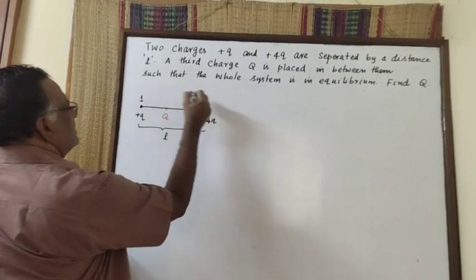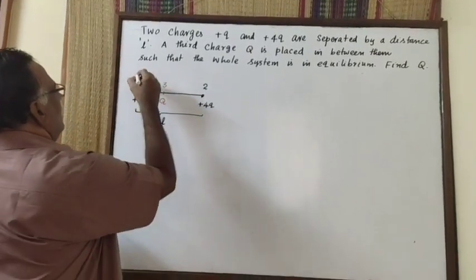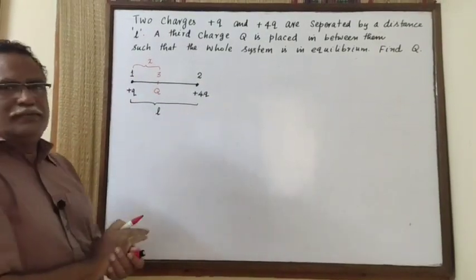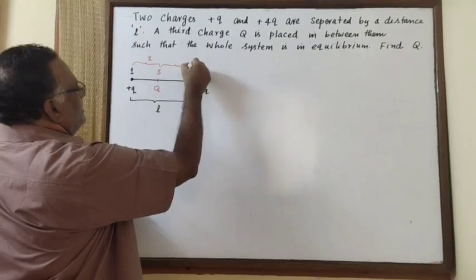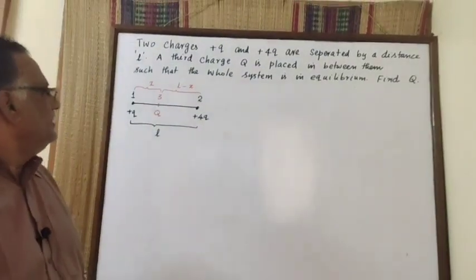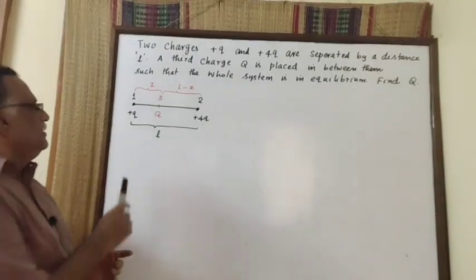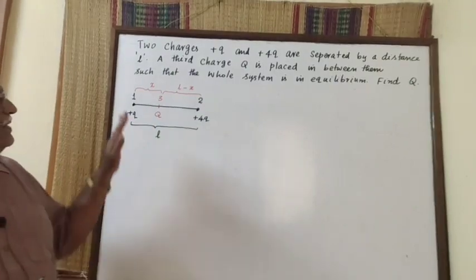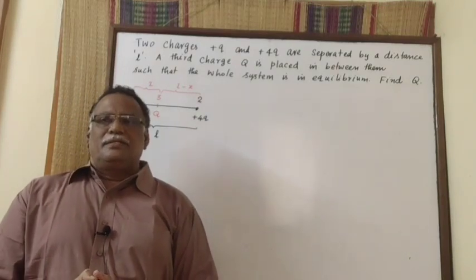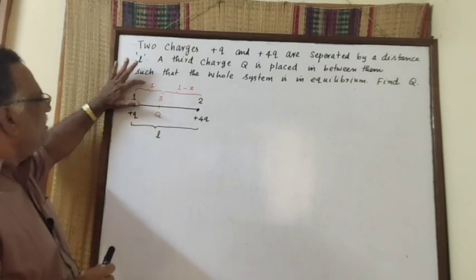We will call charge 1, charge 2, and charge 3. We want to see that this charge is at some distance x from charge 1. I am assuming the remaining distance will be L minus x. We have taken all 3 charges and all 3 charges are in a state of equilibrium — repulsive force and attractive force. So first we will try to estimate the value of x.